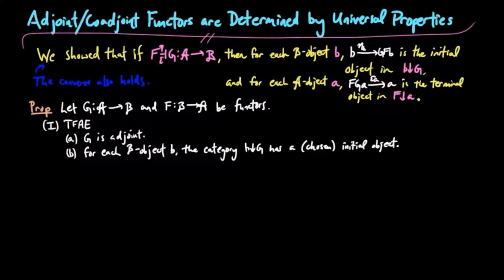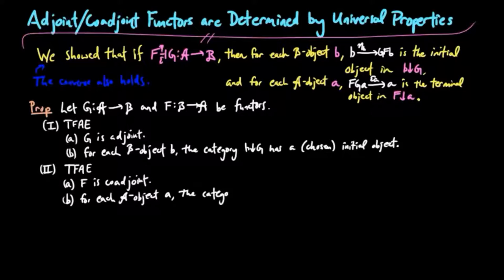We also have a second equivalence: the following are equivalent: (a) that f is co-adjoint, and (b) for each object a, the category f over a has a chosen terminal object.